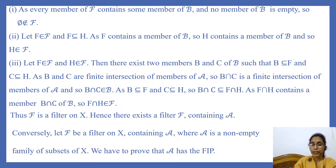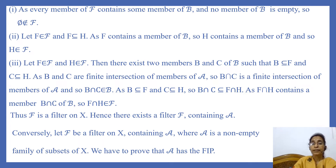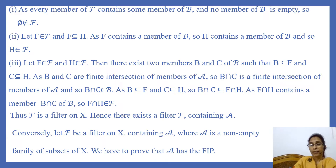So all the properties of a filter are satisfied by F, and so F is a filter on X. Hence there exists a filter F containing A. Conversely, let F be a filter on X containing A, where A is a non-empty family of subsets of X. Then we have to prove that A has the finite intersection property.